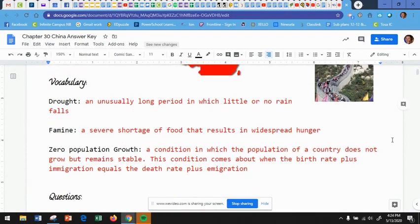The first one is a drought. That's how you pronounce that word, drought. It's an unusually long period in which little or no rain falls. Droughts can then lead to the next vocabulary word, which is a famine. It is a severe shortage of food that results in widespread hunger. And so a drought, not enough rain, means the crops don't grow. If the crops don't grow, people go hungry.